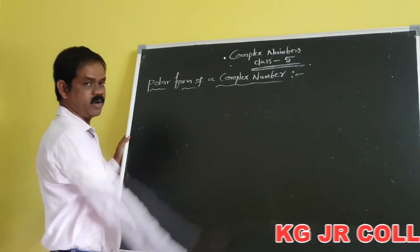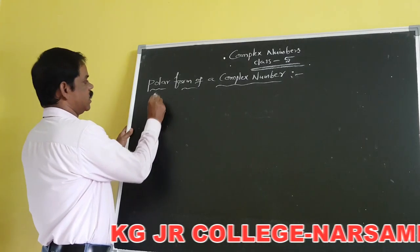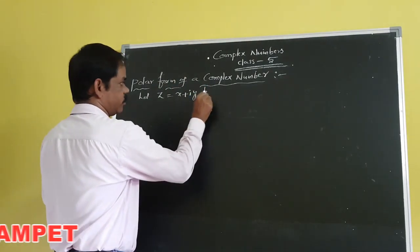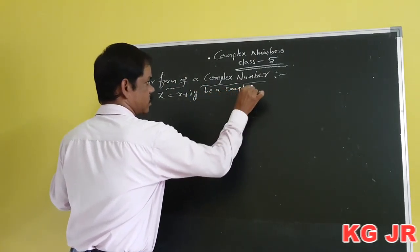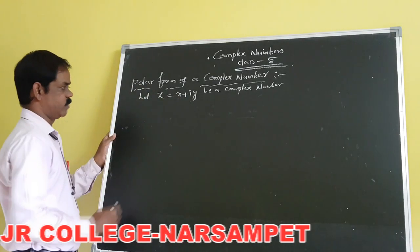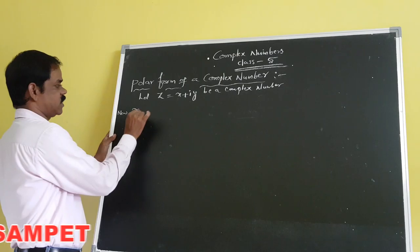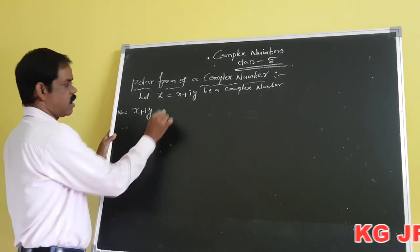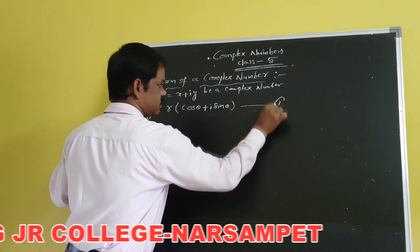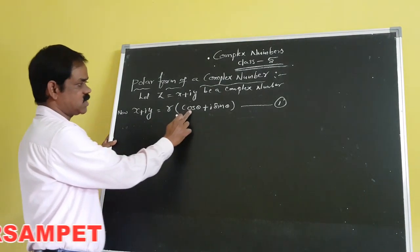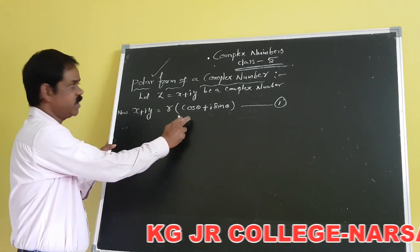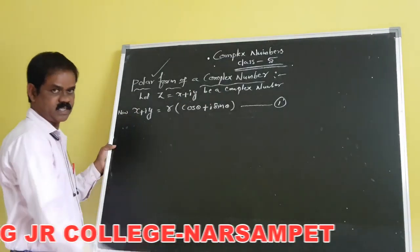Today we have to discuss the polar form of a complex number. Let us consider Z equals to X plus iY, which is the main complex number. We can write the polar form of this complex number as X plus iY equals R of cos θ plus i sin θ. This is called the polar form of a complex number, and it is the standard form.